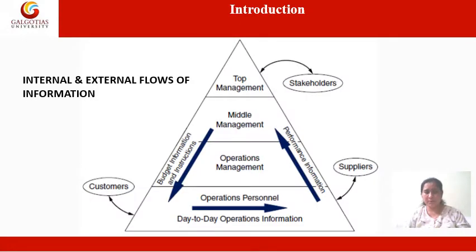Here is a depiction through an image which shows how information flows within the business organization. There can be horizontal flow and vertical flow of information. The horizontal flow supports operations level tasks with highly detailed information about the many business transactions affecting the firm. This includes information about events such as the sale and shipment of goods, the use of labor and material in the production process, and internal transfer of resources from one department to another.